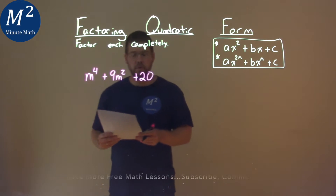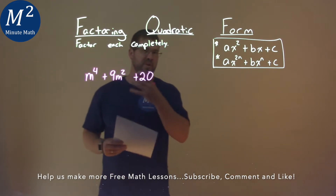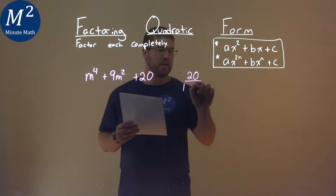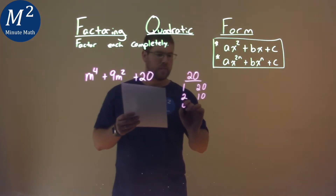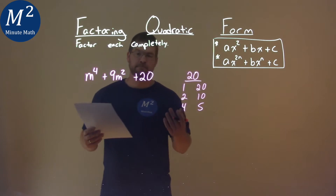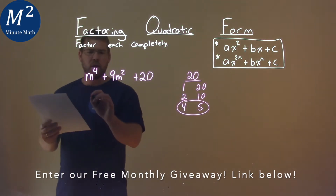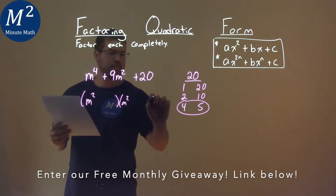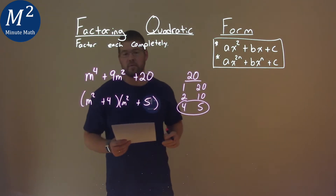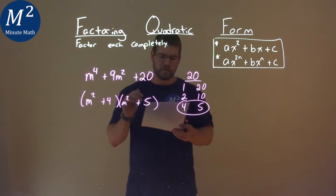We're given this problem right here: m to the fourth plus 9m squared plus 20, and we need to factor completely. Since it's in quadratic form, we follow the same process. Take our c value, which is 20. What two numbers multiply to be 20? That's 1 and 20, 2 and 10, and 4 and 5. With these pairs, we find which pairs add to our b value of 9. That's 4 and 5. So we take this m squared form times m squared, plug in the 4 and 5. m squared times m squared is m to the fourth, 4 times 5 is 20, and 4 plus 5 gives us 9. Our final answer is m squared plus 4 times m squared plus 5.